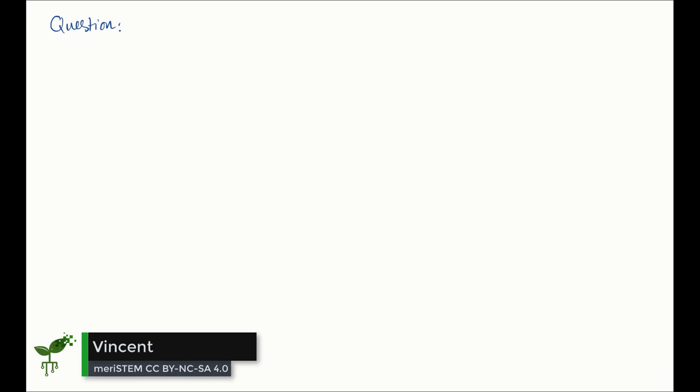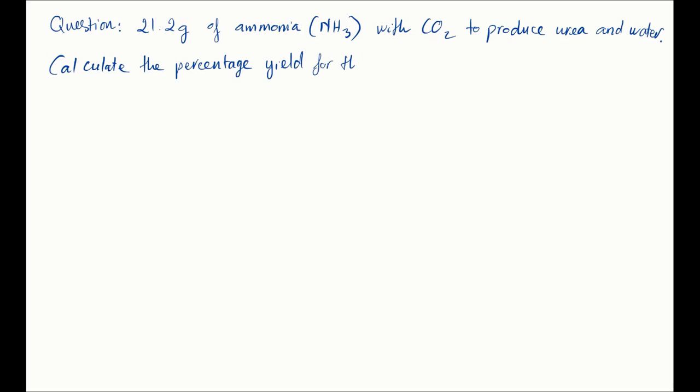Now we are going to put it into context by doing a question and calculate the percentage yield of the following process. The question says 21.2 grams of ammonia reacts with carbon dioxide to produce urea and water. Calculate the percentage yield for this reaction if 22.8 grams of urea is collected in the end.